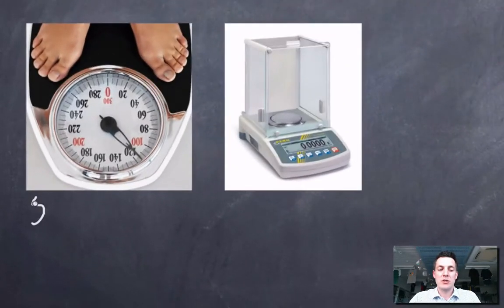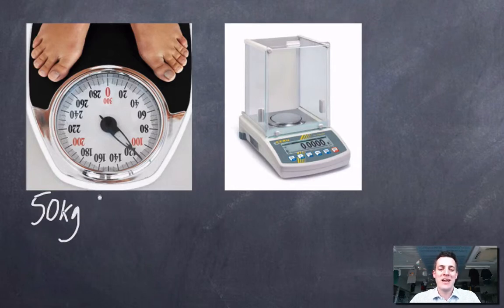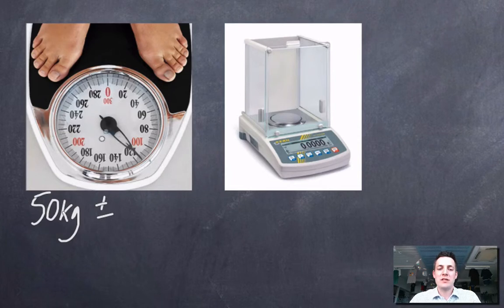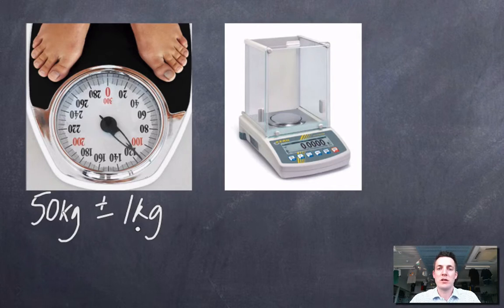Let's say I measured the mass of a person on these bathroom scales and discovered they were 50 kilograms, and the manufacturer told me there was a 1 kilogram uncertainty in any reading I made. It wouldn't matter if I weighed a 10 kilogram person or a 100 kilogram person — they'd always be plus or minus 1 kilogram. This is the absolute uncertainty.